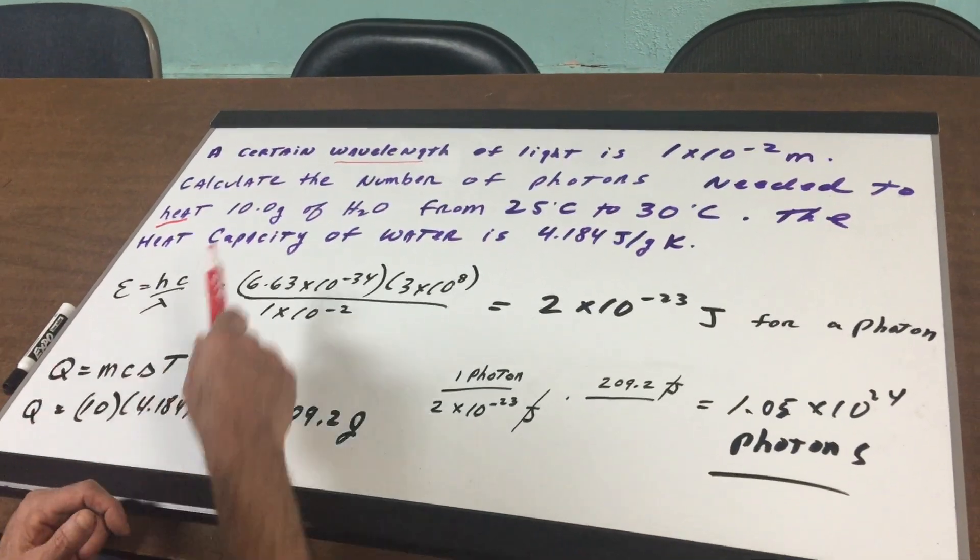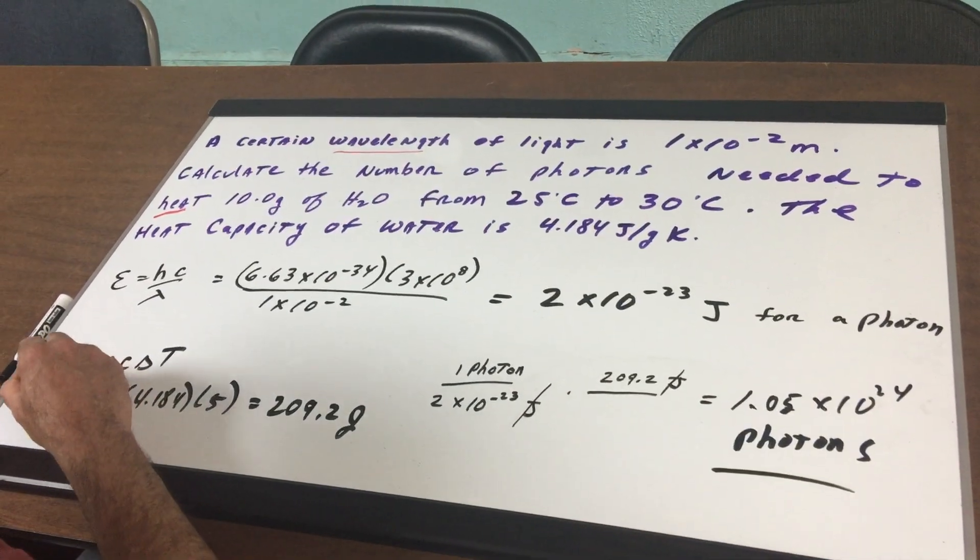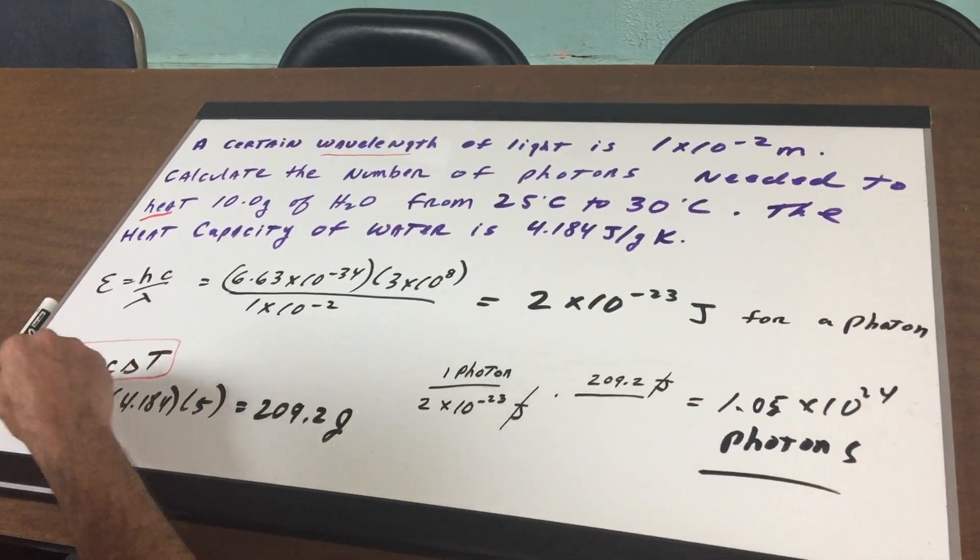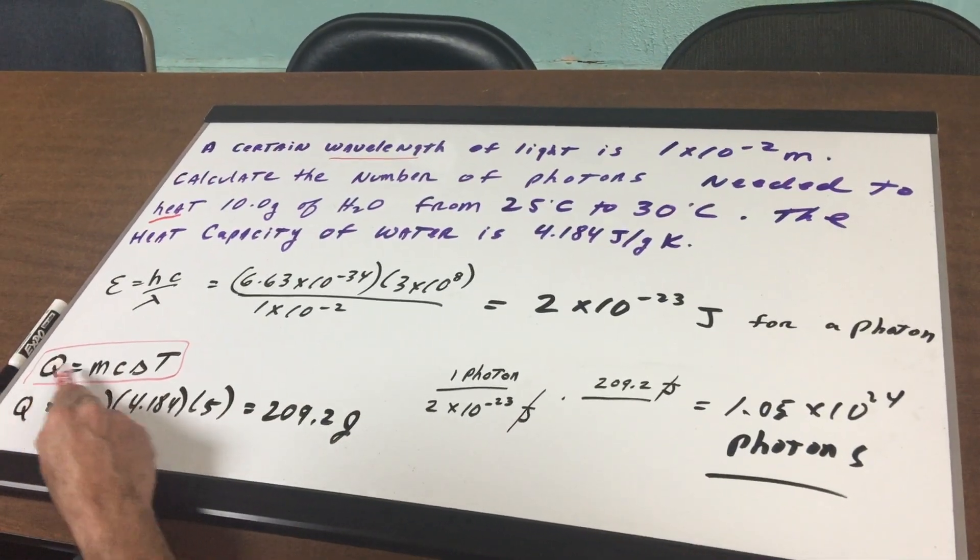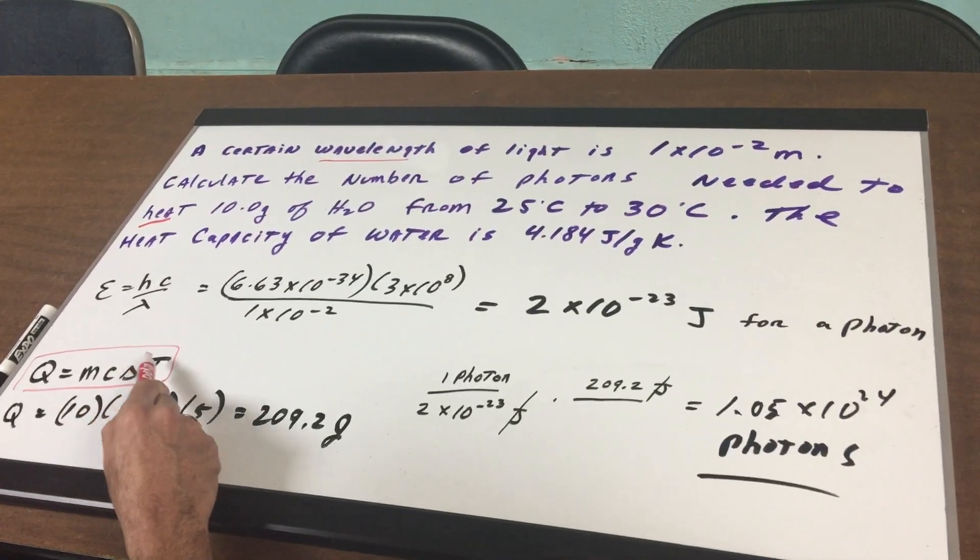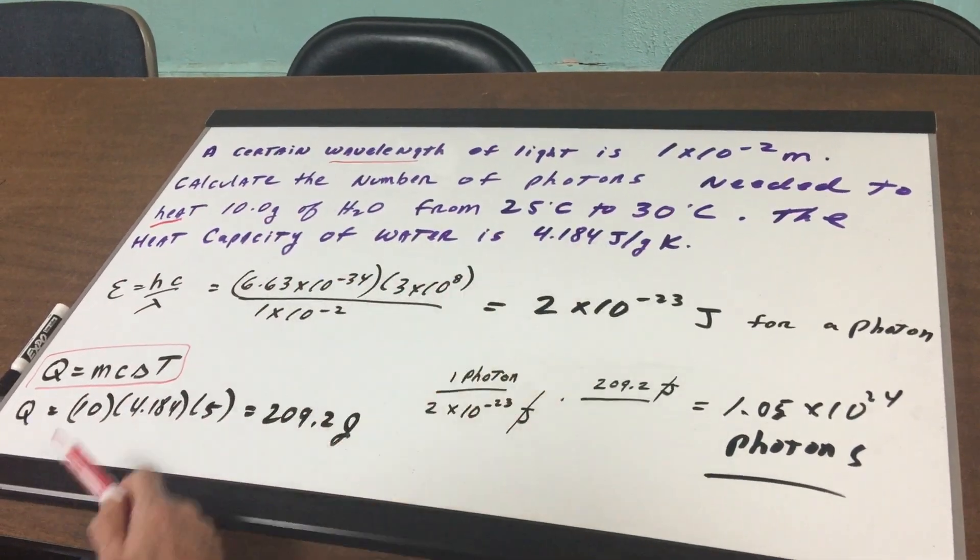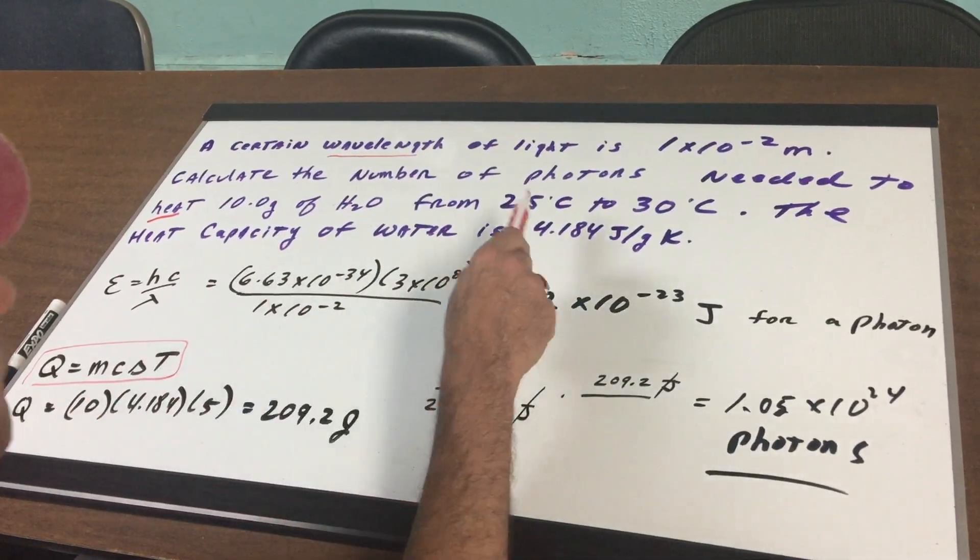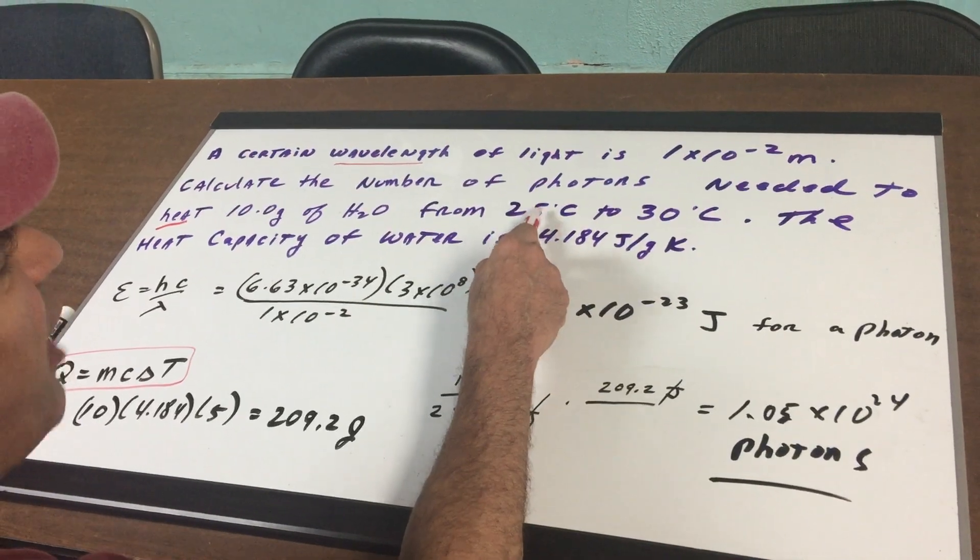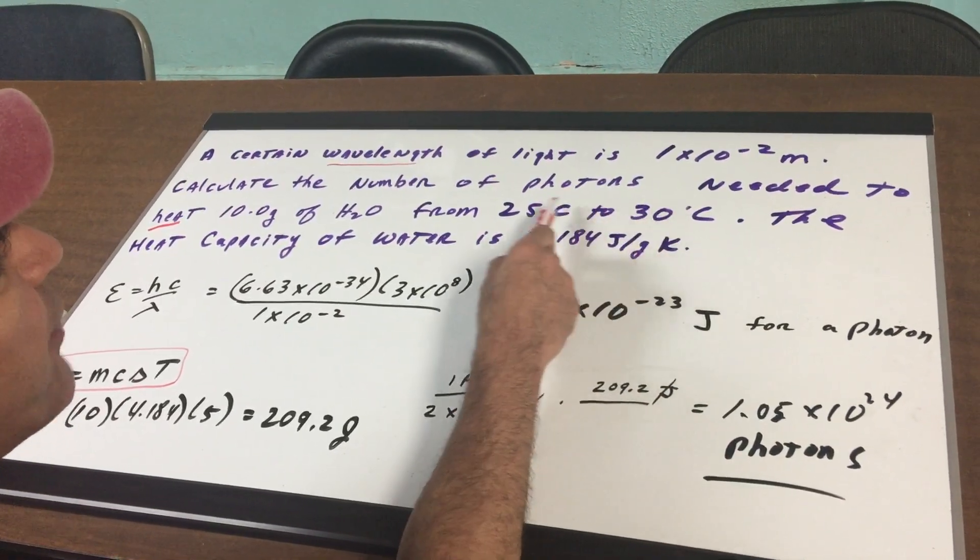All right, now what? We give you a problem involving heat. And if you remember, the formula for heat is Q, which is the heat, equals mass times the specific heat times the delta T. The mass is 10 grams. The specific heat is 4.184. A change in Celsius is 5. It goes from 25 to 30.